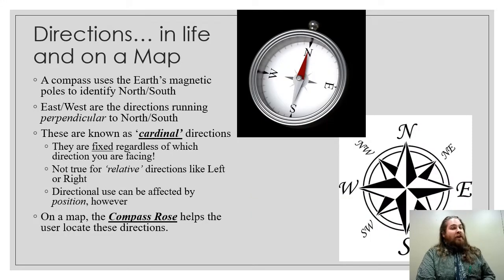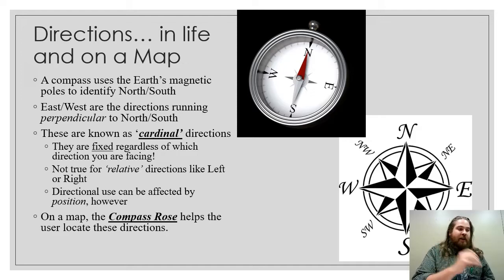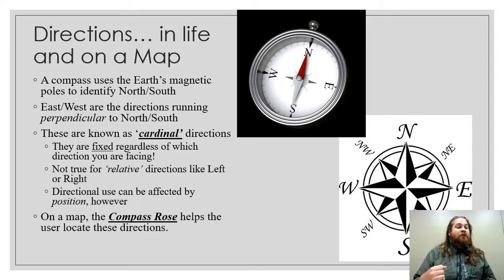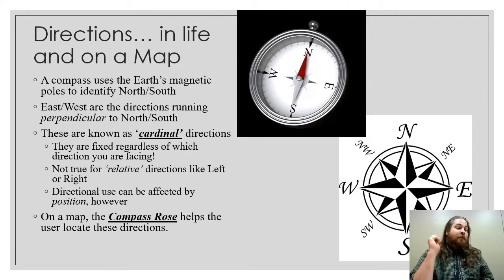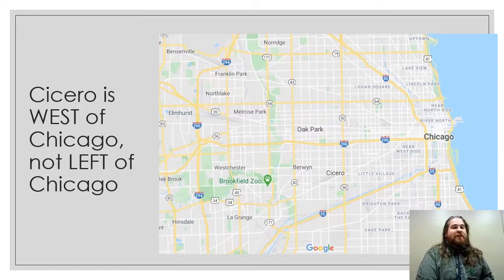Just a few quick reminders about directions. If you ever use a compass — which Mr. Moeller still uses; I don't have a smartphone, I use a compass to navigate — it basically works with magnets. The Earth's magnetic poles are going to move it. Therefore, north, south, east, and west are called cardinal directions, meaning that they never change. North is always north, south is always south — as opposed to relative directions like 'turn left' or 'turn right,' which can change depending on how you're looking. Every map has a compass rose that is going to let you know what north, south, east, and west are. Usually, up is going to be north on a standard map. Looking at this map right here, it's very clear to see that Cicero is not left of Chicago — Cicero is indeed west of Chicago.